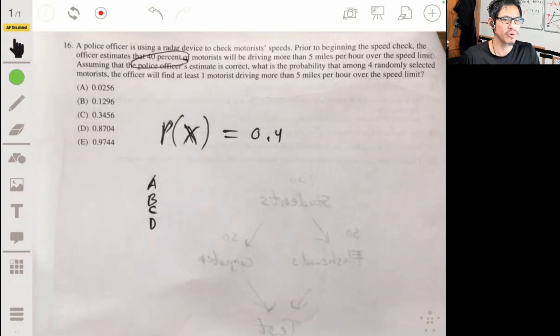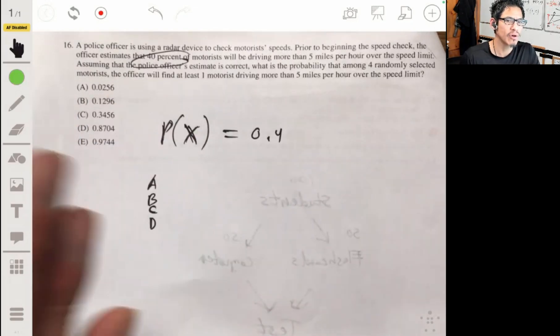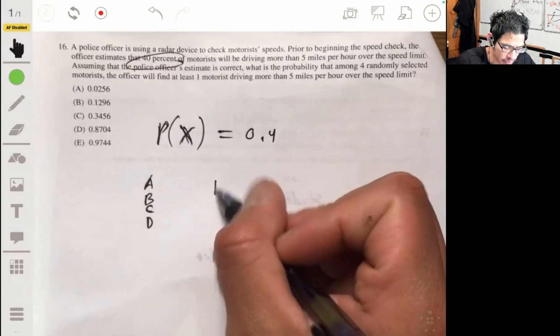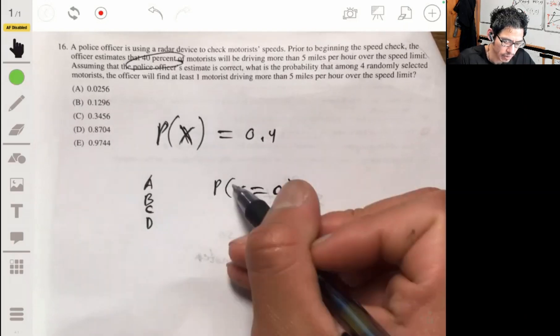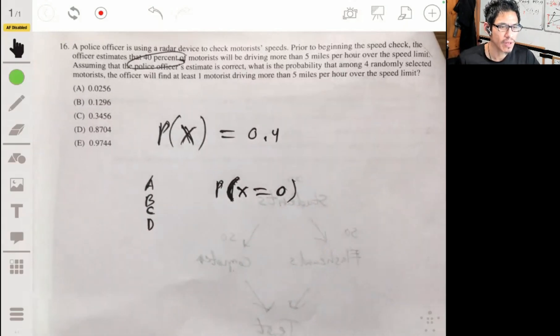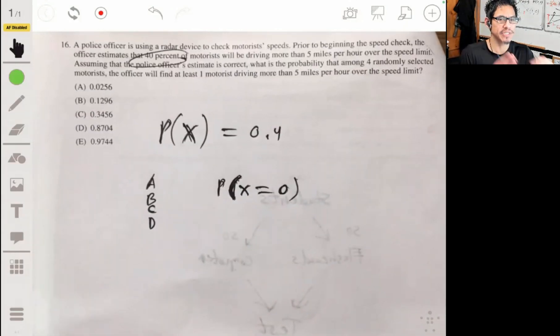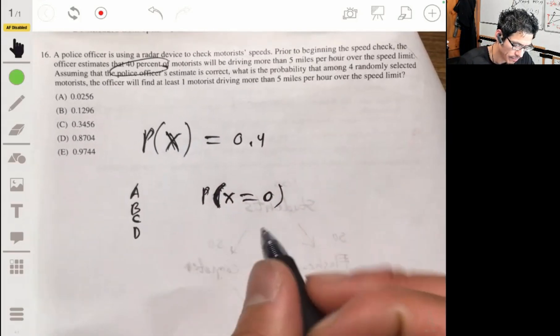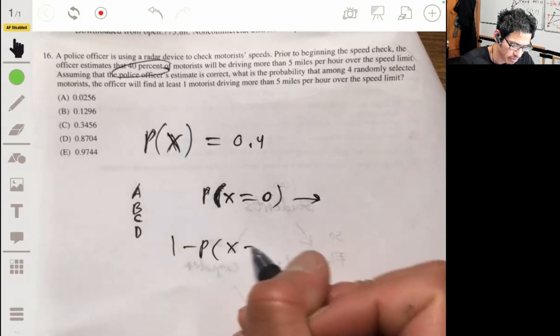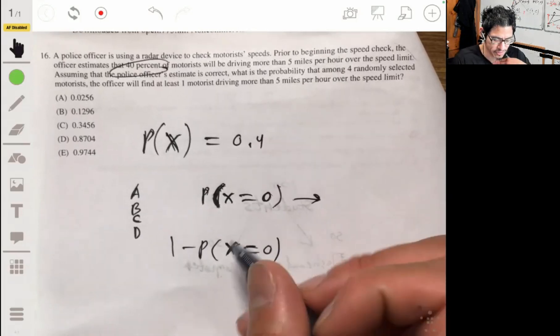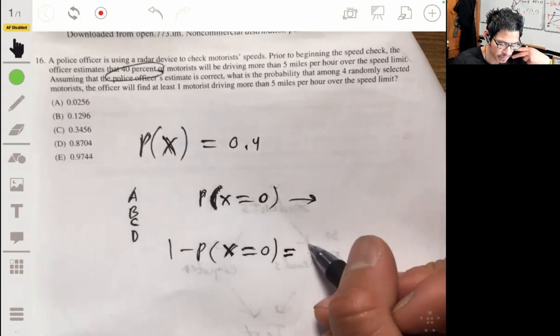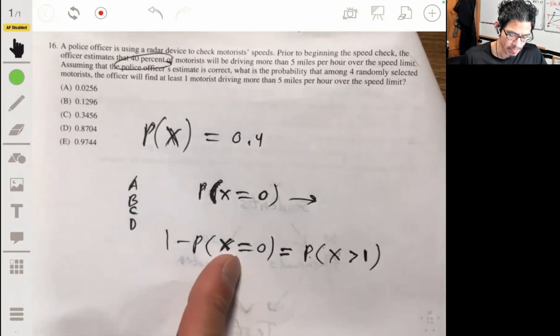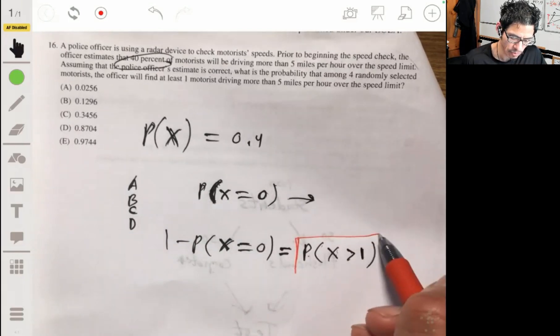Like there's so many possibilities where there could be at least one of them because you could have all four of them, all three of them, or two of them, or just one of them. There's a lot of combinations. So a way that I would go about this and the way I went about this is find the probability that none of them drive over the speed limit, because the probability that none of them drive over the speed limit is easier to find. And from there, we can find the probability that at least one of them drove over the speed limit by setting this up into this equation.